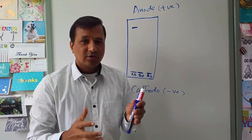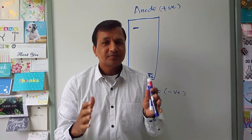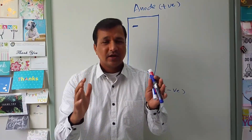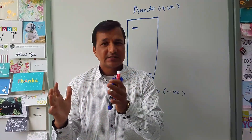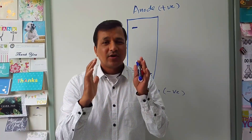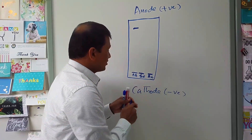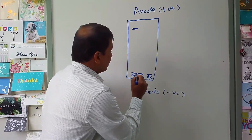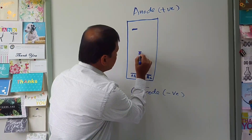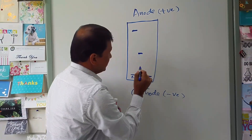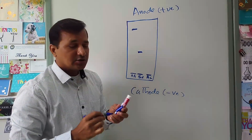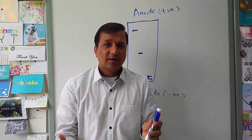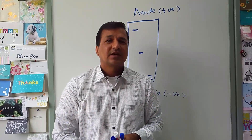In sickle cell hemoglobin, at the sixth position of the beta chain, glutamate is replaced by valine. Glutamate is negatively charged, but valine is a non-polar amino acid, so one negative charge is lost. In sickle cell anemia, both beta chains are mutated, so the hemoglobin moves only to the middle of the slide and stops there — it has lost negative charge and cannot travel all the way to the anode.